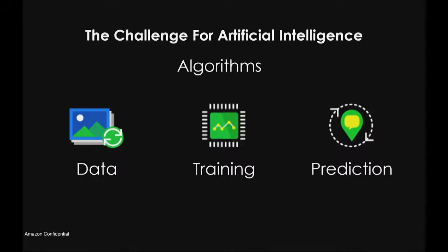The good uses of these are recommendation systems, predictive analysis — whether an event is going to happen or not, whether somebody is more likely to take your service or not. This is where AI is extremely powerful.